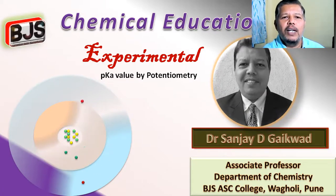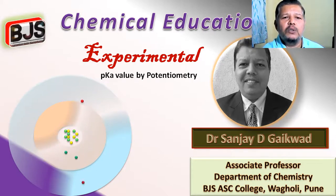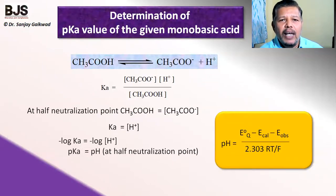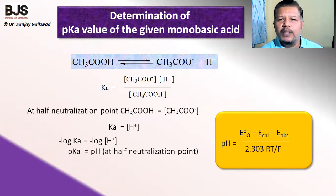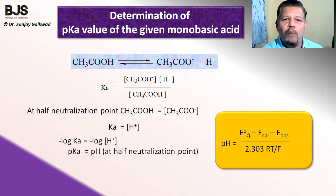Hello, welcome to the chemical education series. In this video, we are going to see some experimental part related to the potentiometer. One application is to determine the pKa value of the given monobasic acid. For example, we are taking acetic acid as a monobasic acid and we have to measure the pKa value by obtaining the pH of the solution with the help of a potentiometer.